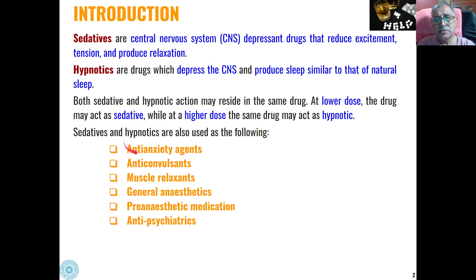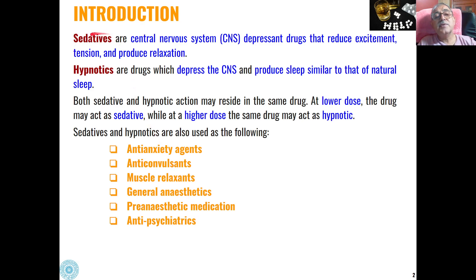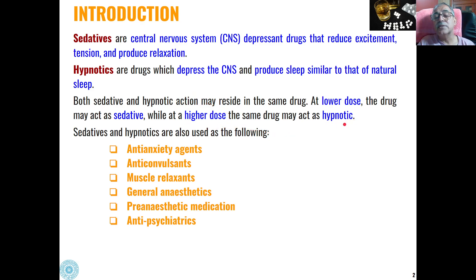Basically both these can act as anti-anxiety agents and anti-convulsants. They also act as muscle relaxants because they produce relaxation in the human body. They can also be used as general anesthetics. Pre-anesthetic medication and anti-psychiatrics are also covered under sedatives and hypnotics. Both sedative and hypnotic actions may be present in the same drug — at a lower dose the drug acts as a sedative, whereas at a higher dose it acts as a hypnotic.